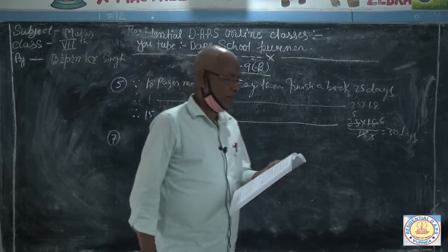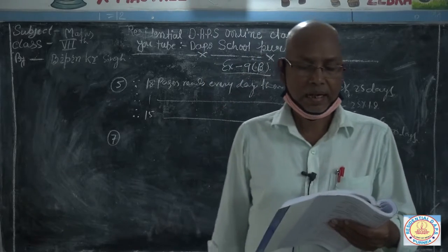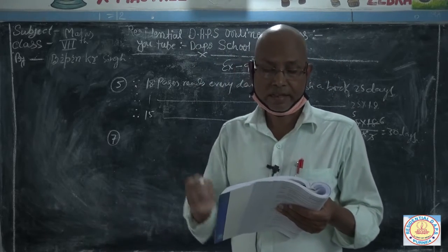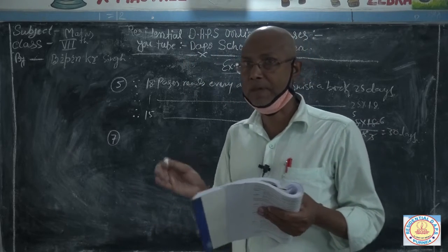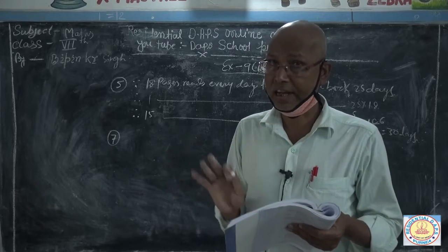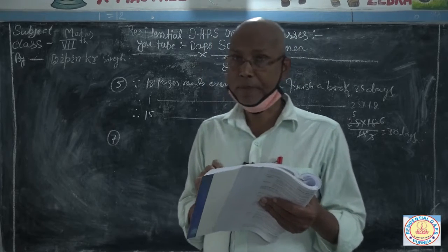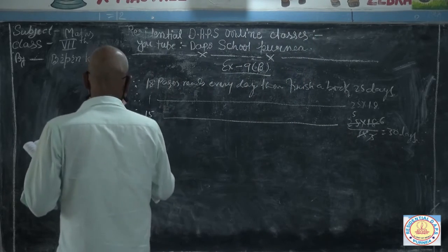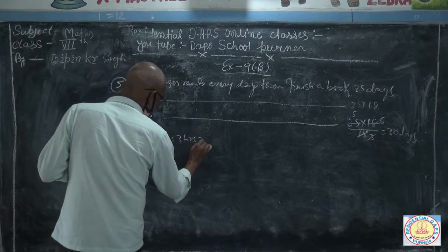Question number seven. A bus covers a certain distance in 3 hours 20 minutes at an average speed of 45 km per hour. If the bus travels at 36 km per hour instead, how much time will it take and what distance will it cover?